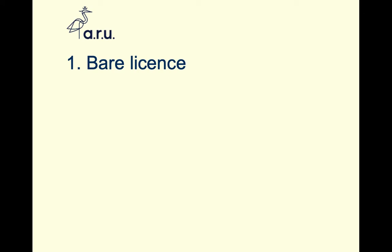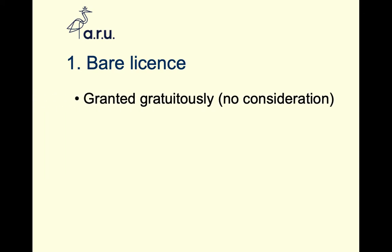The first and most basic type is the bare license. A bare license applies to that bare permission to be on the land. There is no consideration given — no money, no contract, nothing that ties the parties together — it's just freely given permission to be on the land. It's gratuitous; it's free.